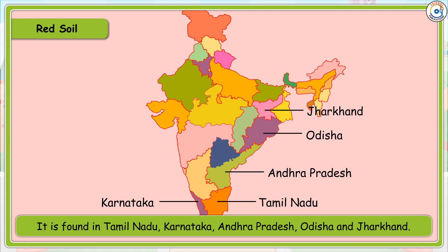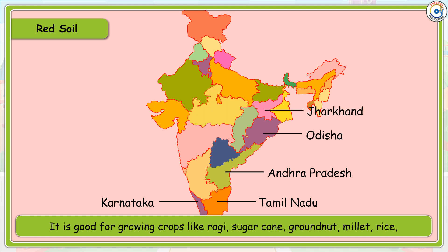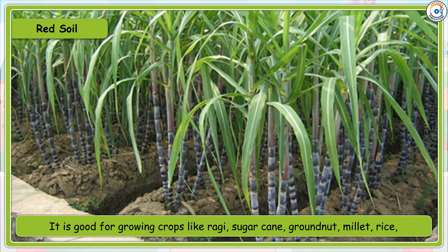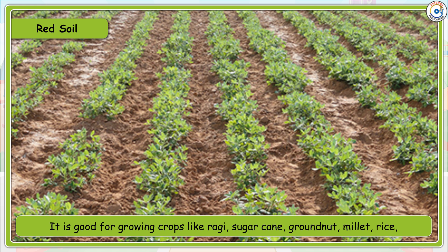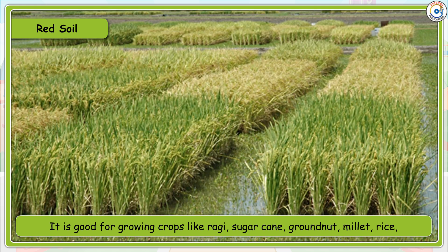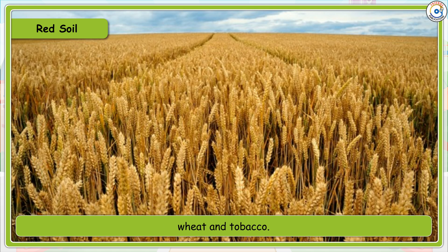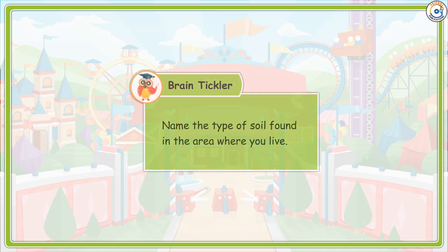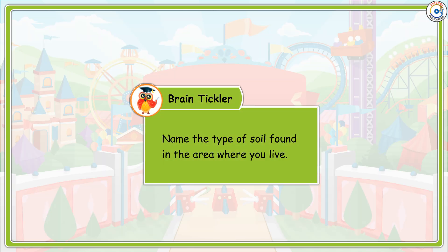Red soil is good for growing crops like ragi, sugarcane, groundnut, millet, rice, wheat, and tobacco.